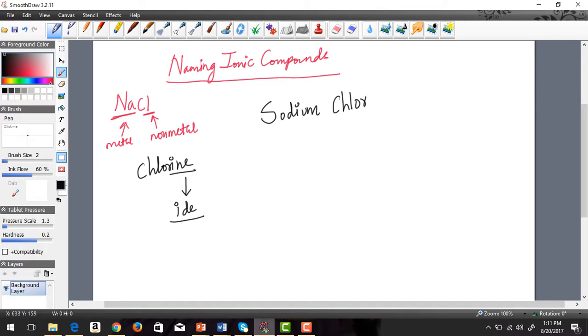So sodium chloride. Ionic compounds are fairly the easiest bunch to work with. This is sodium chloride. Let's go back and pick our red color again and let's try a different compound. BeCl2.